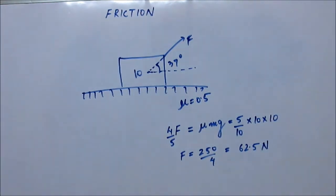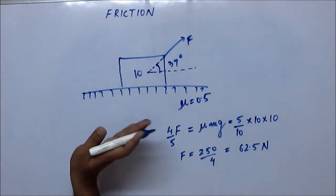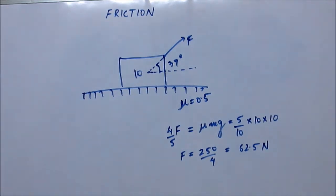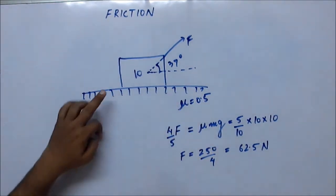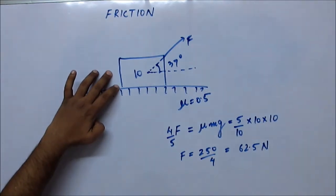62.5 newtons of force minimum is required for the block to move. That's okay. Now let's find the minimum amount of force that will be required for the block to move up. The upward force is f sin 37 degrees. When the block is at the verge of being lifted, that means it is at the verge of losing contact with the ground, and at that very moment normal reaction will cease to exist.